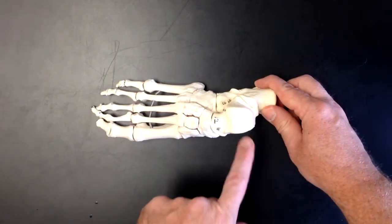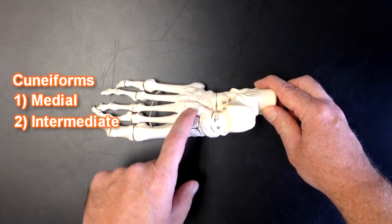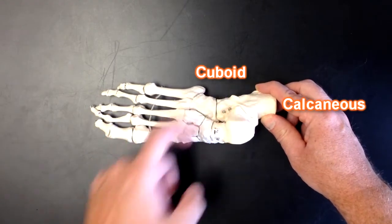So again, talus, navicular, medial intermediate, lateral cuneiform, cuboid and calcaneus.